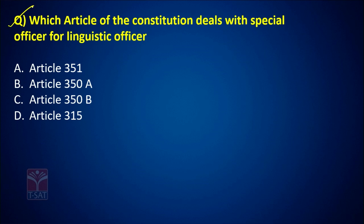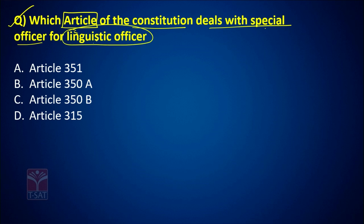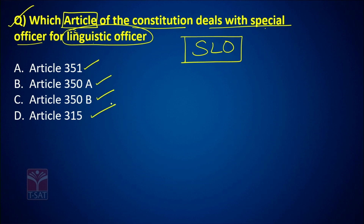Next question: which article of the constitution deals with the Special Linguistic Officer? Options are 351, 350A, 350B, and 315. You can eliminate 315 because Article 315 talks about the Union Public Service Commission, SPSC, and JPSC. Article 351 says the centre shall send directions to the state for the development of the Hindi language — so that is also eliminated.